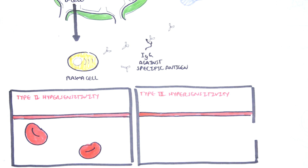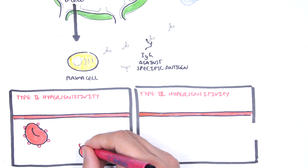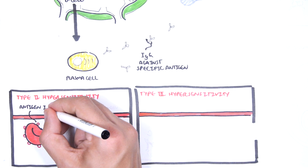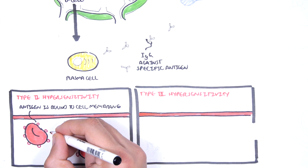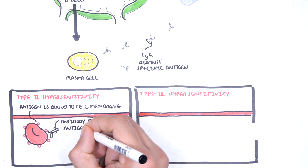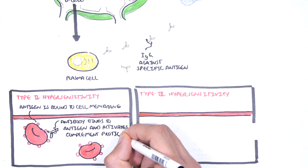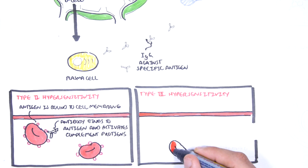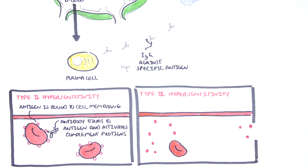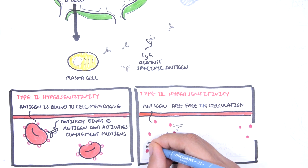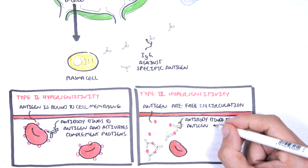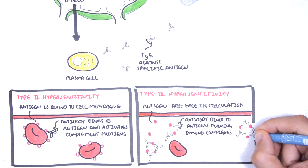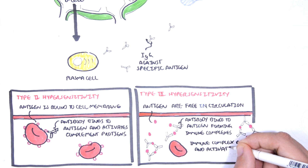Both type 2 and type 3 hypersensitivity reactions involve complement activation. However, in type 2, antibodies bind to antigens bound to cell membrane surfaces, acting as a bridge to activate complement proteins. Whereas in type 3, antibodies bind to free circulating antigens, forming chains of antigen-antibody complexes — the immune complexes — which then deposit into body tissues and activate complement proteins.